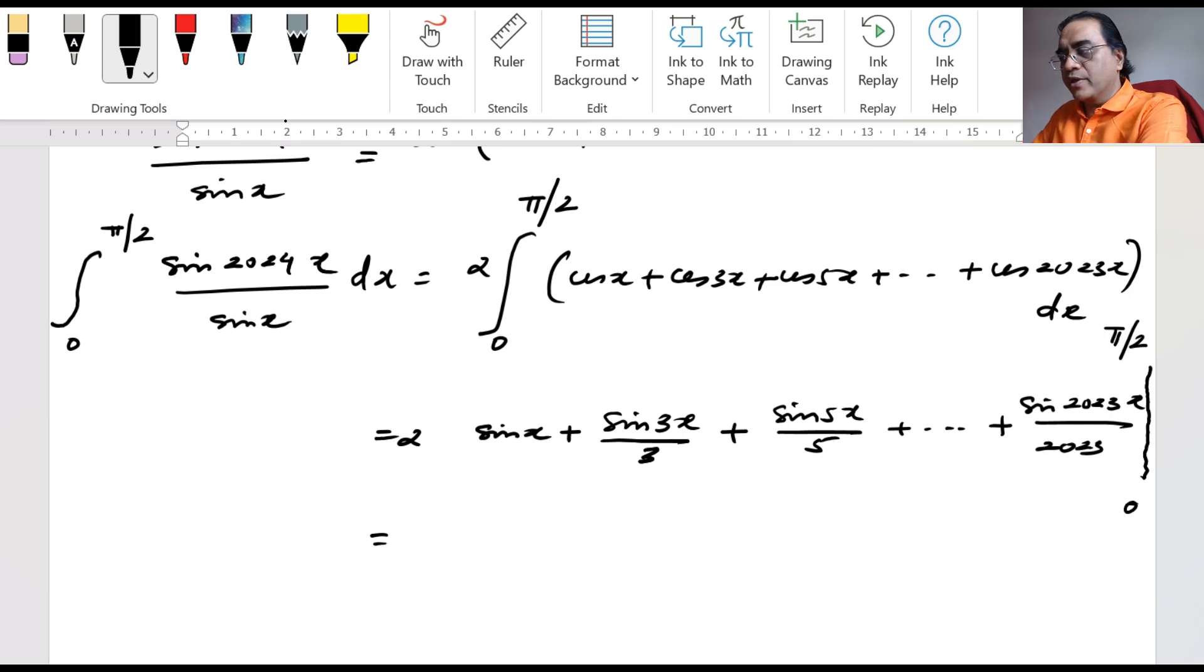When we put 0, we have got 0 everywhere. When we put pi by 2, sin pi by 2 is 1, sin 3 pi by 2 is minus 1, sin 5 pi by 2 is plus 1. We have this plus 1 minus 1 pattern.